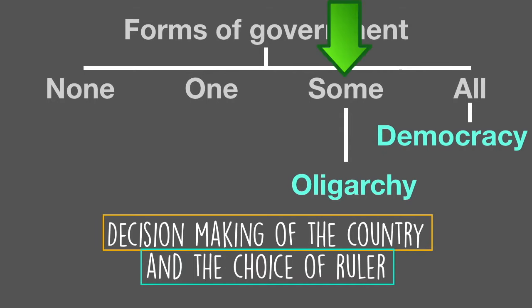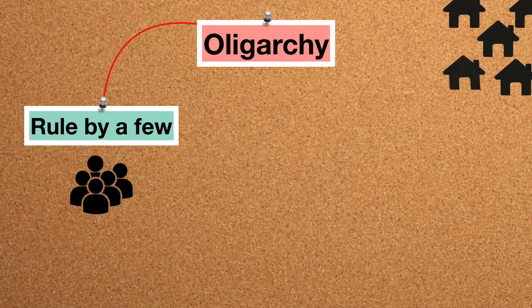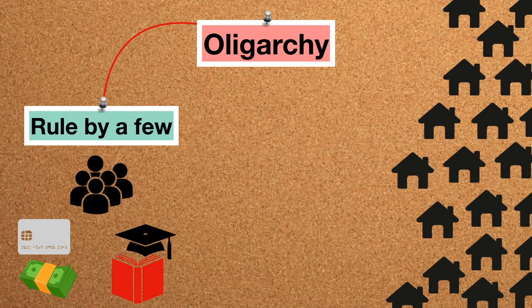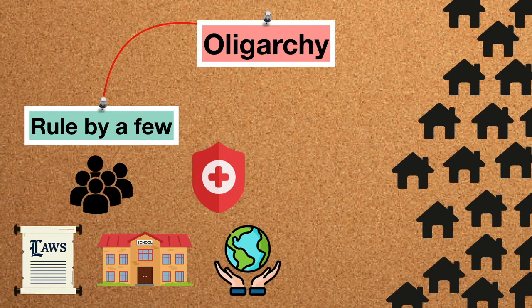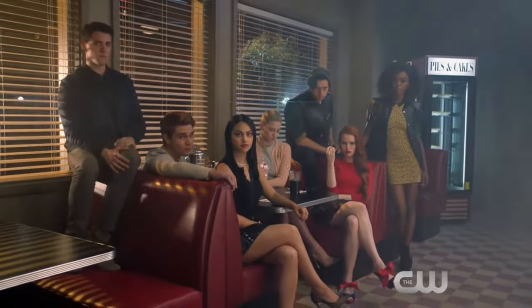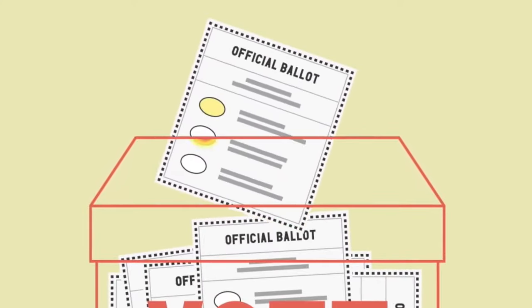Let's talk about the form of government where only a few people are in control — we call this an oligarchy. The simplest definition is rule by a few. Imagine a small group of people making all government decisions for a large population. This small group usually shares something in common: they might be the richest people, the most educated, involved with the military, or belong to the same religious faith. They get to make the laws and decide all public issues. In oligarchies there is no voting, and if there is voting, it's usually some form of fixed election.